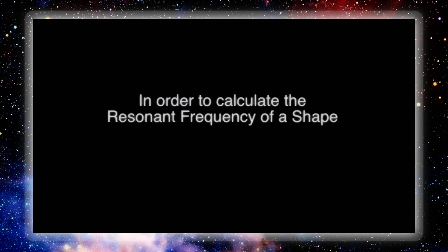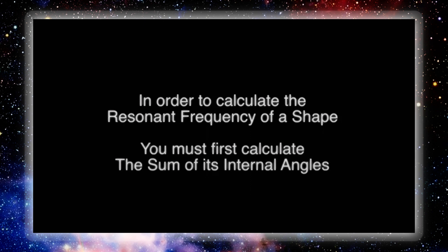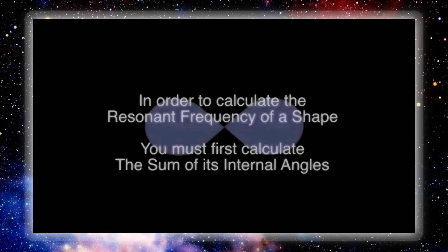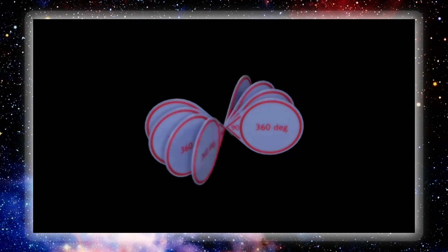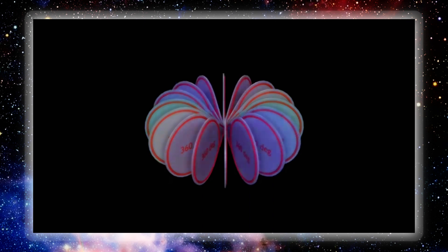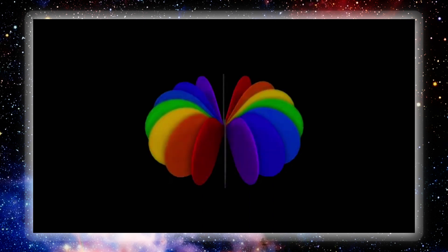In order to calculate the resonant frequency of any shape, you must first calculate the sum of its internal angles. To calculate the resonant frequency of an imploded sphere, we must produce the sum of the internal angles contained within all eight planes. The eight planes contain two circles — 360 degrees plus 360 degrees — connected by intersecting angles of 90 degrees and 90 degrees. When multiplied by the eight planes, we arrive at 7200 degrees.